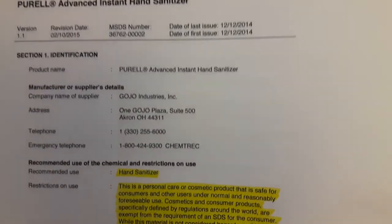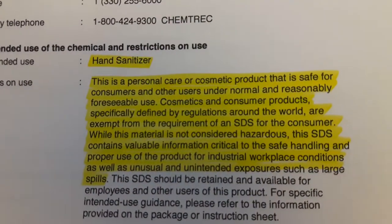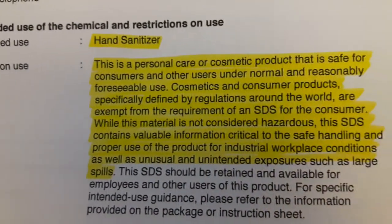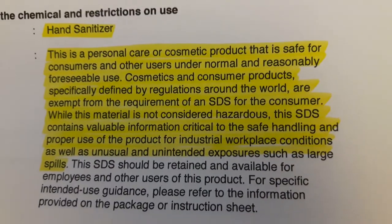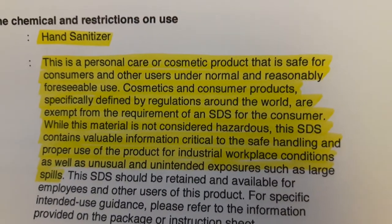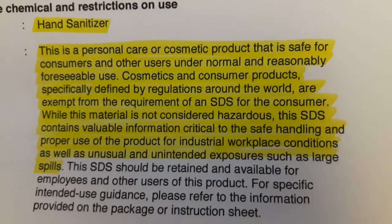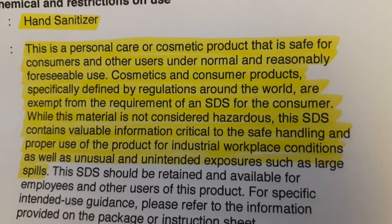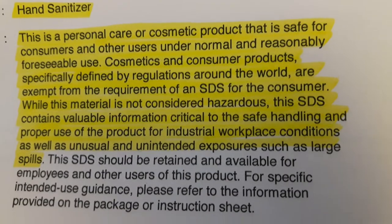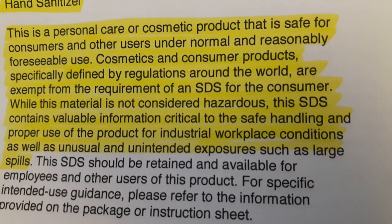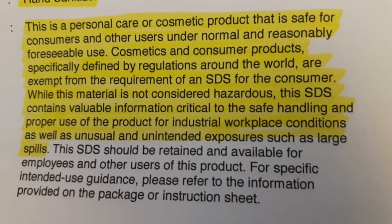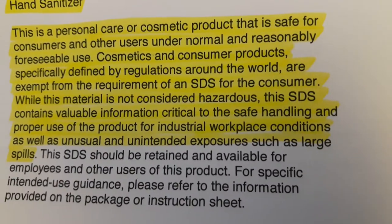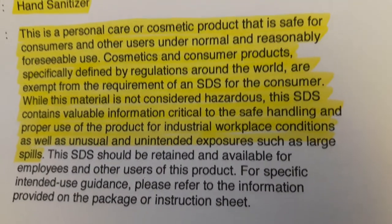On this particular safety data sheet, I'll start with this important statement — intended or recommended use of the chemical, and restrictions on use. It is intended as a hand sanitizer, so it's not meant to be squirted onto surfaces like your steering wheel or sprayed onto the handle of a grocery cart. This is designed for your hands. It is a personal care or cosmetic product that is safe for consumers under normal and reasonably foreseeable use. Cosmetics and consumer products are exempt from the requirement of a safety data sheet for the consumer — because if I sell you lipstick, I'm assuming you're going to use it properly.